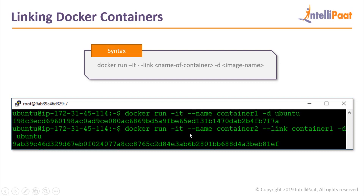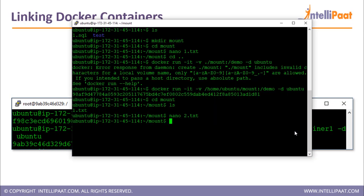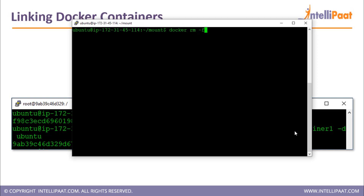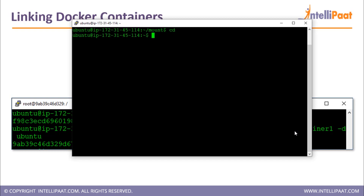Once I've defined container one, when I'm defining container two I name it as container two, type in the --link flag, and specify the container I want to link it with — container one. So I specify --link container one and then the rest of the command follows. Now let's see how we can establish this inside our Docker ecosystem. I'll jump to my terminal, clear the screen, and remove all currently running containers using docker ps -a -q.